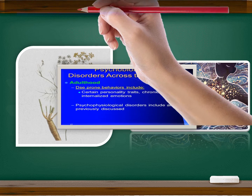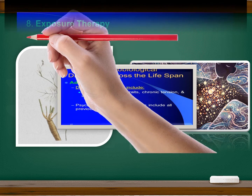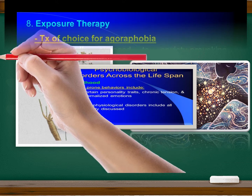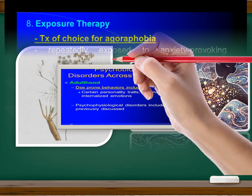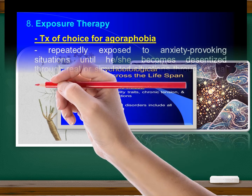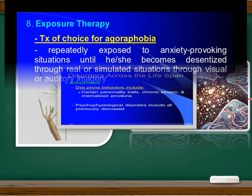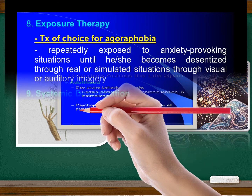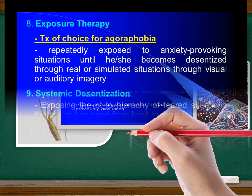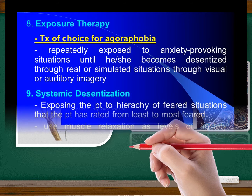Panic disorder with agoraphobia: fear of the marketplace or fear of being outside; fear of stepping outside the front door or staying in a limited area near home. Primary gain: relief of anxiety by performing the specific anxiety-driven behavior, such as staying in the house. Secondary gain: attention received from others as a result of the person's behavior.